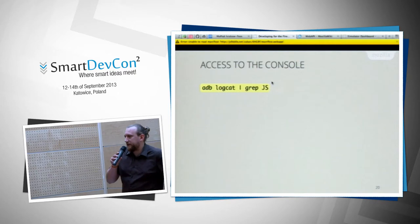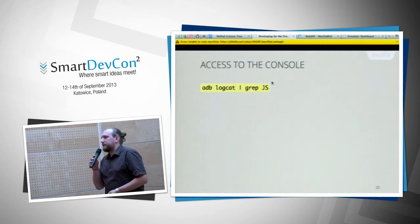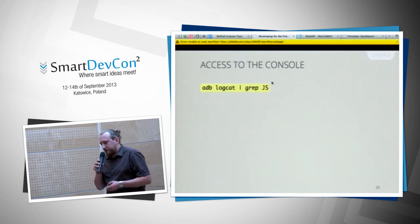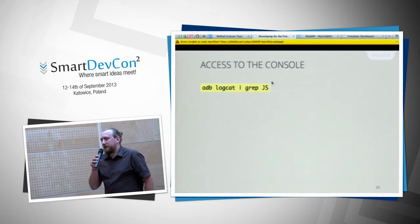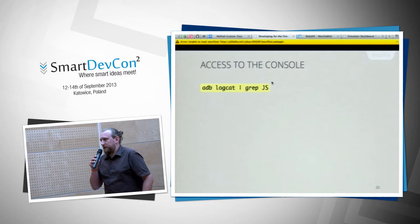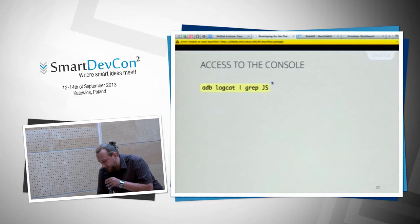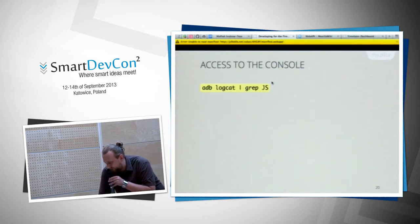At the moment, the only way to get information from the phone is console.log. To display it you just log the phone and grab the JS output, filtering out spam from Firefox OS itself. It's like the old days when you only had console log — that's how I currently debug on device.